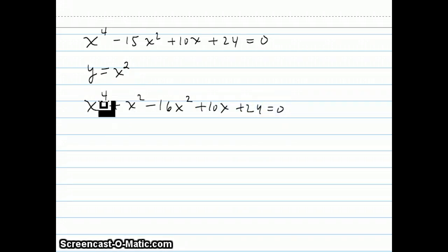Now, since y equals x squared, y squared equals x to the fourth. And this 16x squared can be written as minus 16y. I'll leave the 10x alone, and I'll bring the 24 over to the other side.